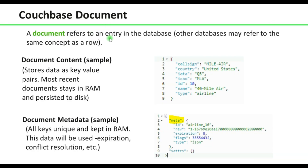What is a document? It is an entry in the database — in other databases we call it a row. It stores data as key-value pairs. Each document also has metadata, as shown in the picture: an ID and a revision count. The revision count is used for conflict resolution when using bi-directional replication. This metadata is also used for expiration and other purposes.